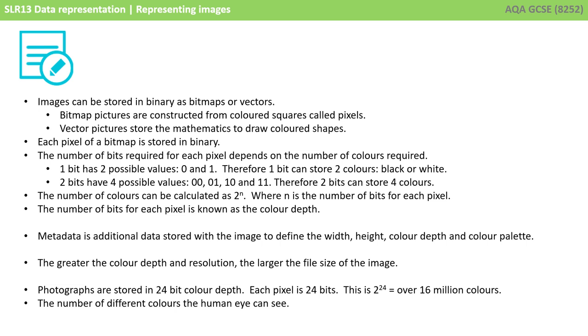Photographs these days are stored in 24-bit colour depth. Each pixel is 24 bits. This is 2 to the power of 24 or over 16 million colours, the number of different colours the human eye can see.